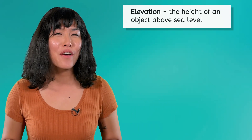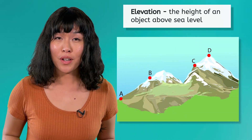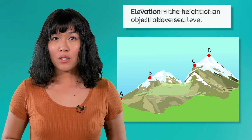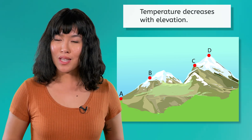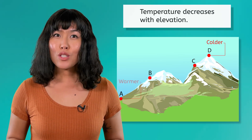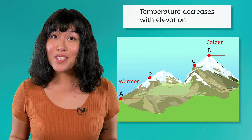Location factors like elevation and latitude play a huge role in long-term weather patterns. Elevation is the height of an object above sea level. In the troposphere, temperature decreases with altitude. So high elevations, like mountain regions, are cooler than surrounding lower areas. This is why mountain tops can have snow, even in the summer.